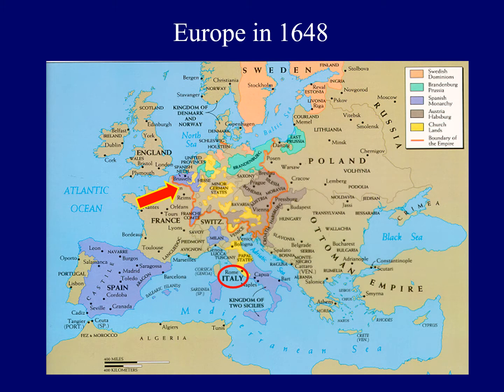Before we get into some of the specifics, I wanted to show a map of Europe in the mid-1600s. Notice Italy — it's circled here on the map, but Italy was not unified as a country until the 1800s. Notice the different principalities or regions in Italy; those were separate countries. Also, the arrow is pointing to a border around Central Europe where there was a loose confederation of German states. There was no country of Germany at that time.